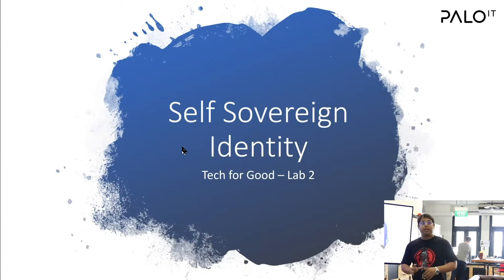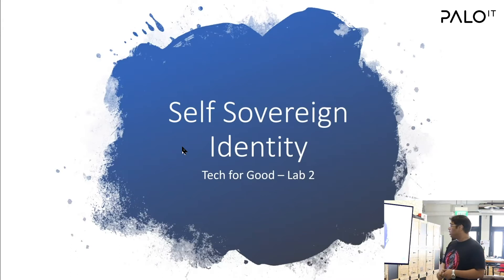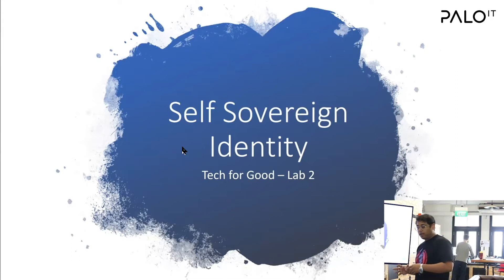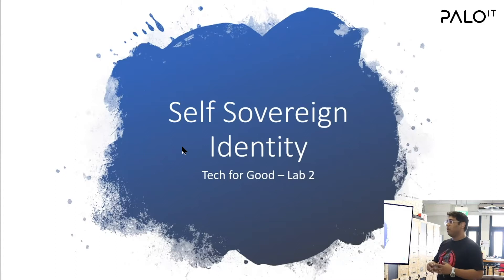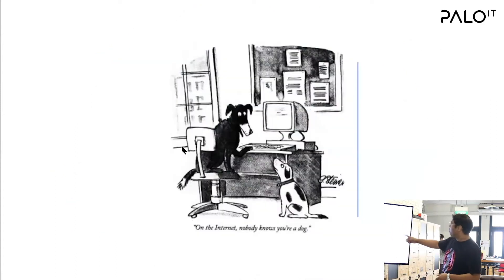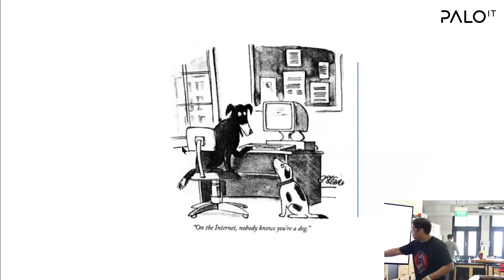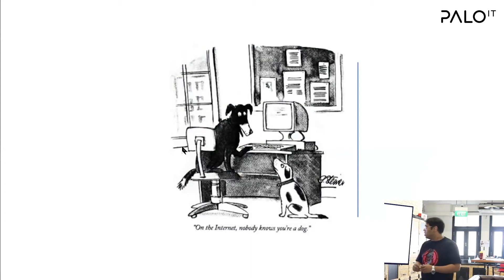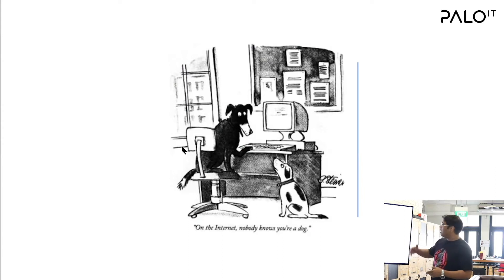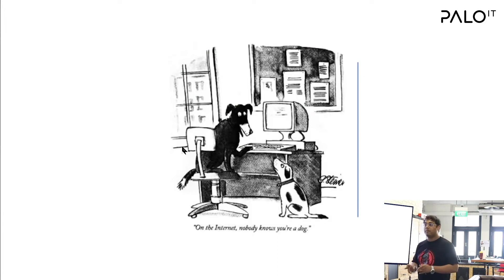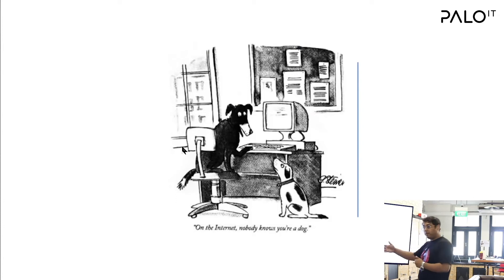Self-sovereign identity is part of how we will try to solve the problems we are facing with digital identity today. Before we go into what self-sovereign identity is, let us first establish the problems we have in today's world. We have a cartoon strip here which says, 'On the internet, nobody knows you're a dog.' What we are trying to establish here is the trust factor. Today when we are logged in to the internet, chatting with someone or browsing any application, we don't know if the other person is truly who they claim to be — whether it's a person, a bank, or any entity.